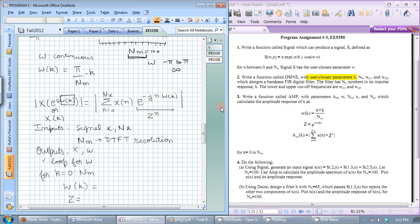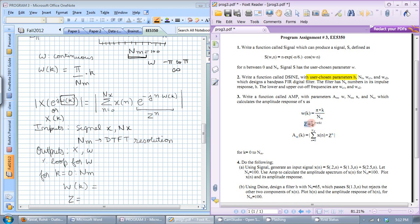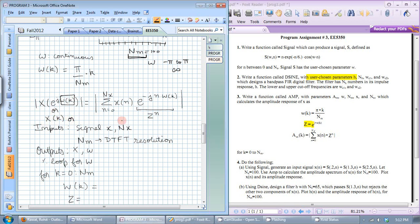Instead of minus infinity to infinity you will write 0 to nx because xn is 0 outside this interval. And e to the negative j omega n. Instead of omega I am using omega k. This e to the negative j omega is being represented by z. This kind of reduces the math needed but it's optional. So it will produce x e to the j omega k or you will be storing it in x of k or as in the problem it's referred to as am of k.